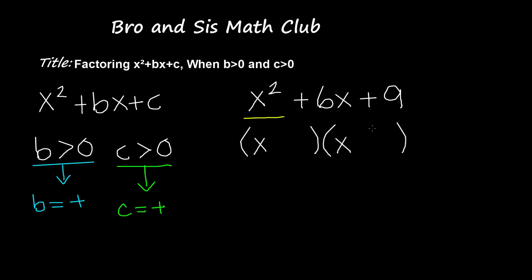Now we have to find the two factors of the number 9. The way to find the other two numbers is to find two factors of c — that is, two factors of 9 which, when multiplied, give us 9 and when added give us positive 6.